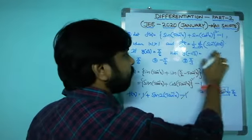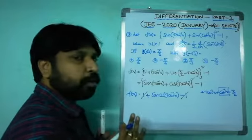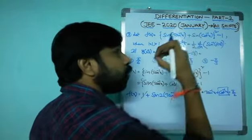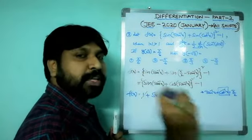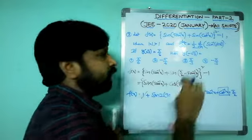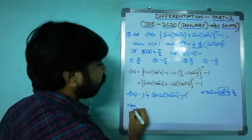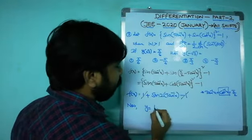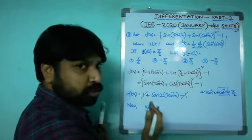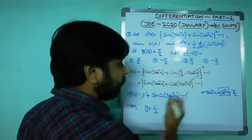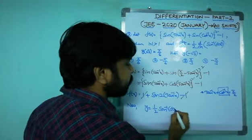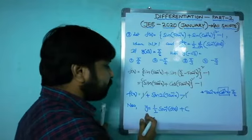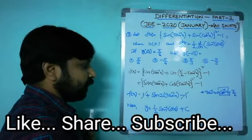Now integrate both sides of dy/dx = (1/2)·d/dx[sin⁻¹(f(x))]. The integration of a derivative cancels, giving y = (1/2)·sin⁻¹(f(x)) + C.